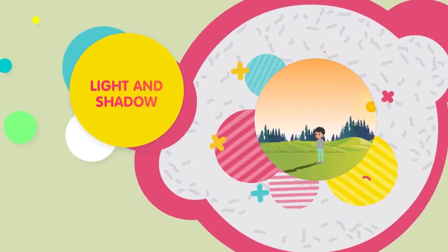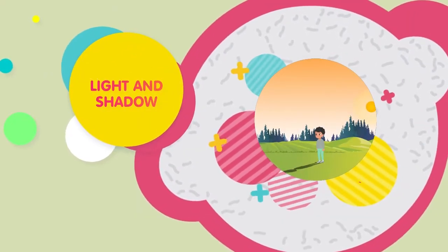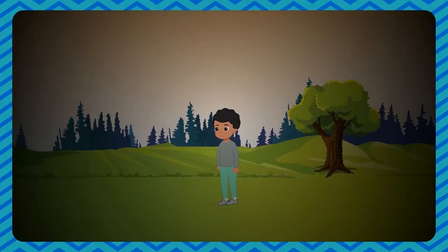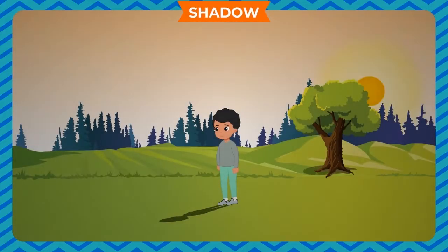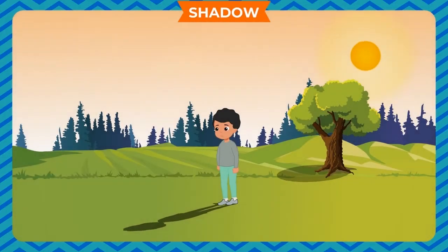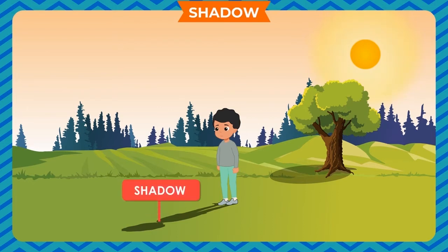Light and Shadow. Come out of your house in the morning and stand in the sunlight. Keep your back towards the rising sun. You will see a long dark image on the ground in front of you. This is your own shadow.